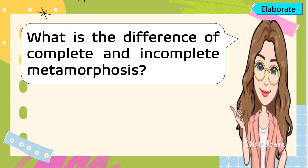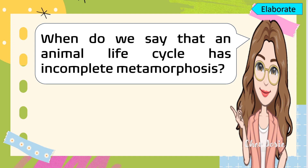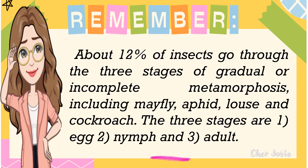Based on our discussion, what is the difference between complete and incomplete metamorphosis? What are the stages of incomplete or gradual metamorphosis? When do we say that an animal's life cycle has incomplete metamorphosis? Always remember that about 12% of insects go through the three stages of gradual or incomplete metamorphosis, including mayfly, aphid, louse, and cockroach. The three stages are: number one, egg; number two, nymph; and number three, adult.